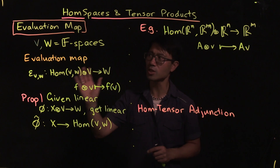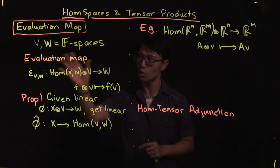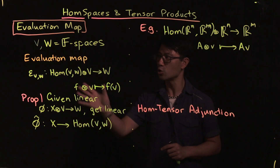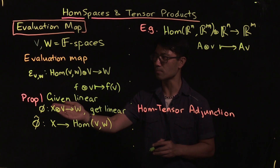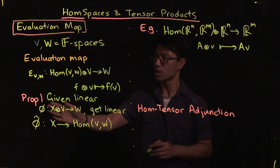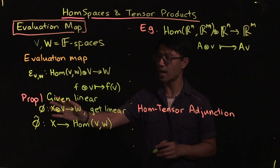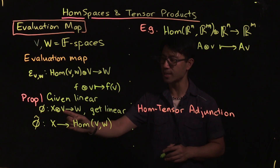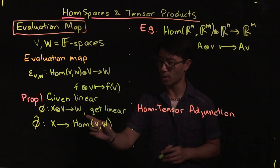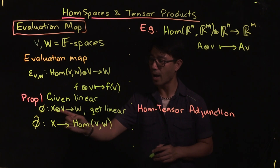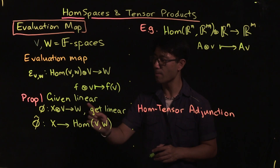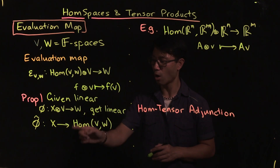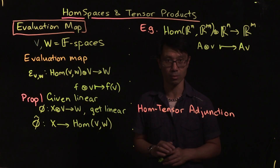So what's the proposition which will allow us to use this in an interesting fashion? Suppose we're given a linear map φ from X ⊗ V to W. What I claim is that if you use this, you can get a linear map from X to Hom(V, W).